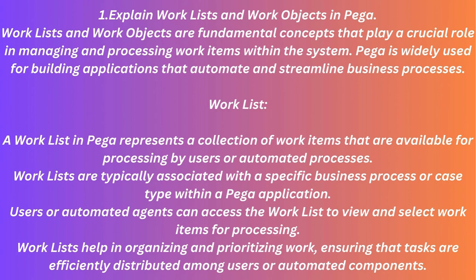Question: Explain worklists and work objects in PEGA. Answer: Worklists and work objects are fundamental concepts that play a crucial role in managing and processing work items within the system. PEGA is widely used for building applications that automate and streamline business processes. A worklist in PEGA represents a collection of work items available for processing by users or automated processes, typically associated with a specific business process or case type.